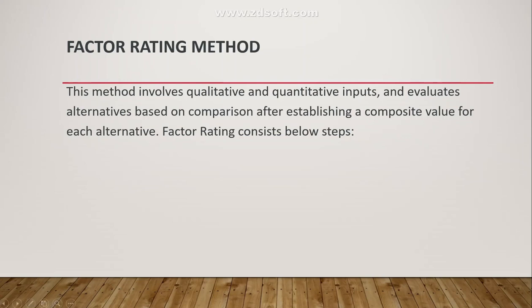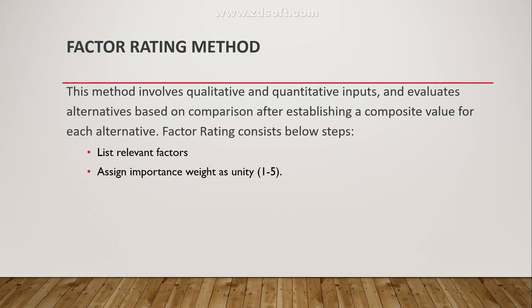Let's look at the steps of the Factor Rating Method. The first step is to list down the relevant factors that have an impact on the selection of the manufacturing unit location. The second step is to assign an importance weight to each factor — you can use a scale of 1 to 100 or any range — to rate how important each factor is for your business.